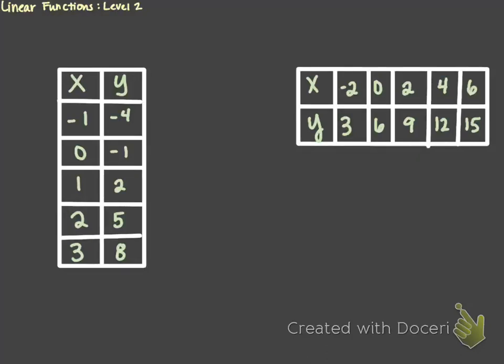Hey guys, today we're going to be talking about how to write a linear function given a table or a situation. So first off, let's review how to write a linear function in slope-intercept form. That slope-intercept form is going to be y equals mx plus b.